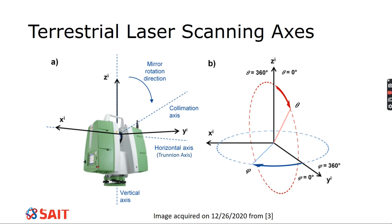For you to know: every single scanner does this math for you, except for maybe the exterior orientation for geo-referencing. All the rest is built into the scanner, so you can get your x, y, and z coordinates when you export. There are some axes I'm going to be talking about that you need to be aware of — just some names so you can label them. This is an actual scanner — looks like the C10, or maybe a P40 or P20.